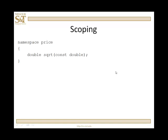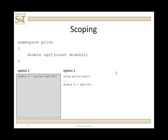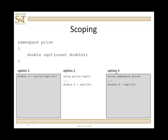Establishing a namespace really establishes a scope. I have three options for referring to this function. Option one: I create a variable d of type double and set it equal to 'price::square_root' — scoping the function call, telling the compiler I want the price version of sqrt. Alternatively, option two: I say 'using price::square_root', which means any time the compiler sees sqrt, it will look for it in the price namespace. Option three: when I say 'using namespace price' and then write 'double d = square_root(9)', it will look in the price namespace for the identification of sqrt.